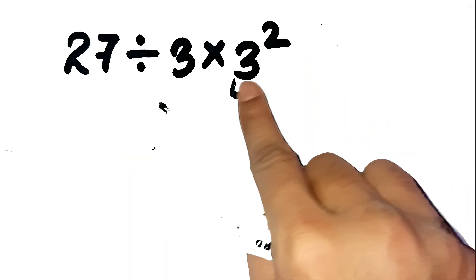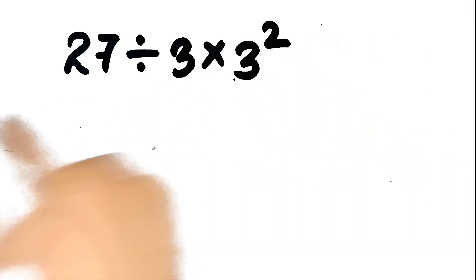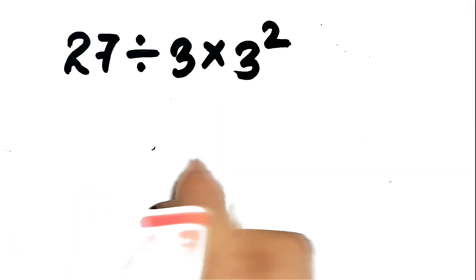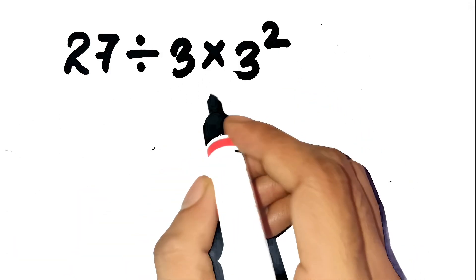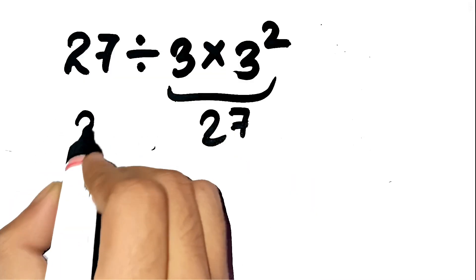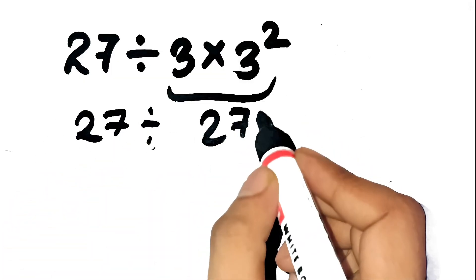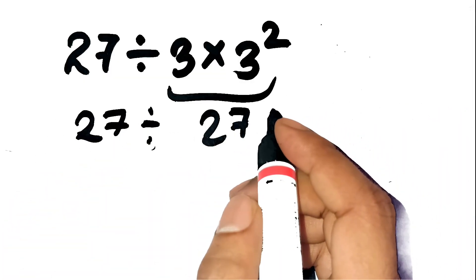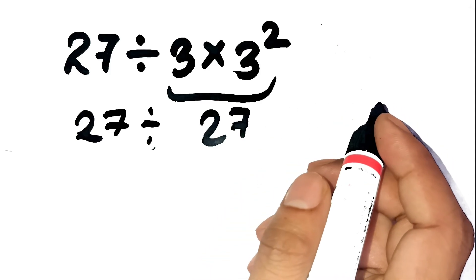Most people do step 1: 3 squared gives 9. Step 2: multiply 3 by 9 to get 27. And step 3: 27 divided by 27 equals 1. And your brain goes, yep, that checks out. Except it doesn't. At all.